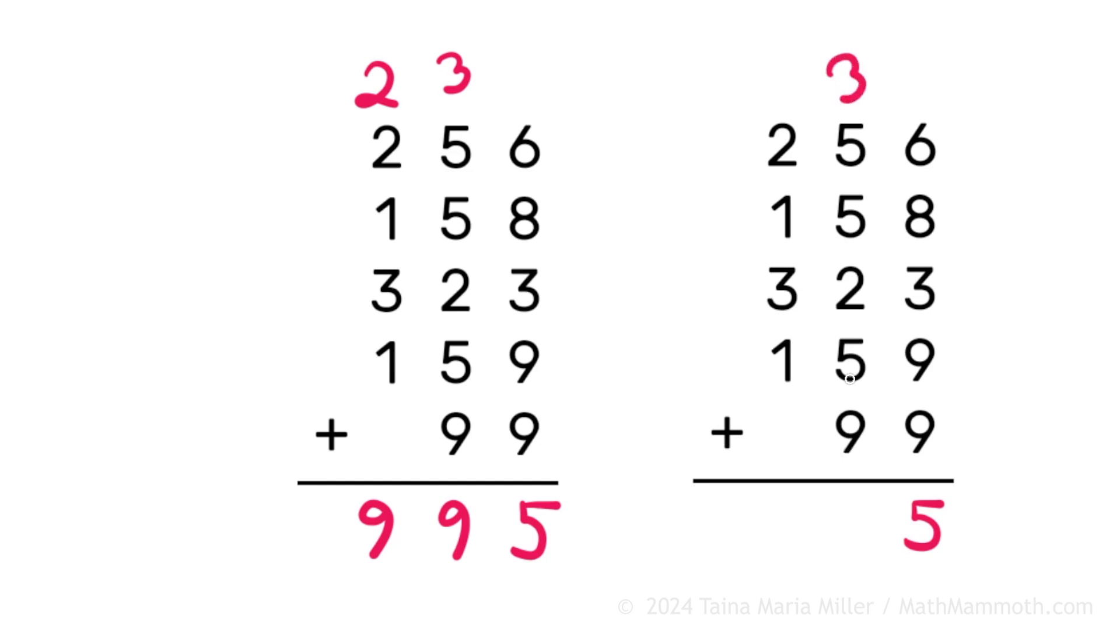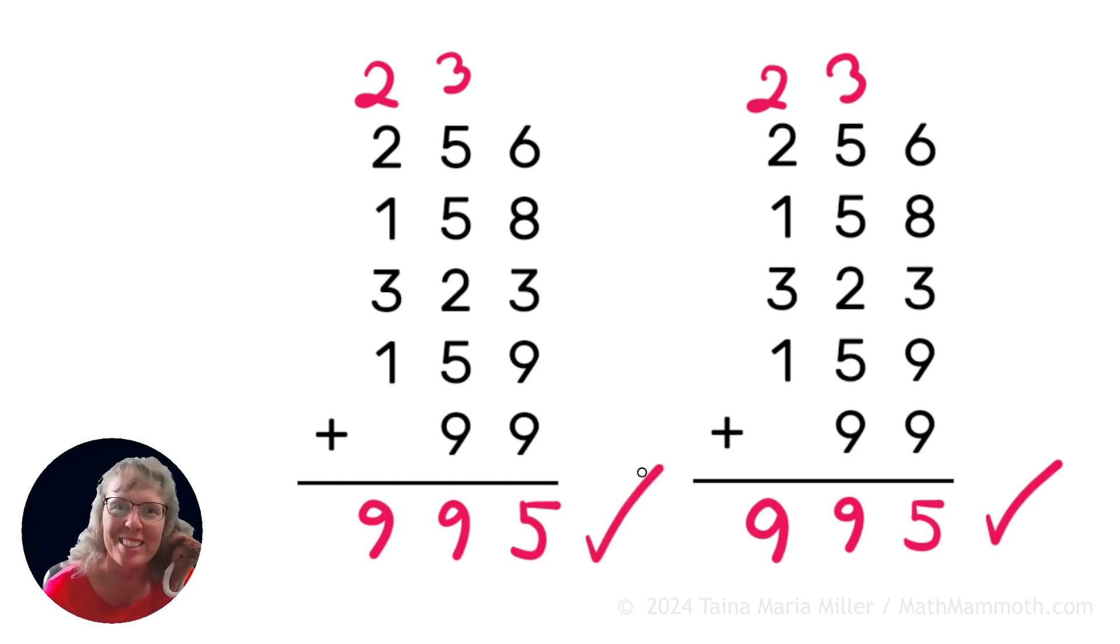Again, I will start from the bottom, 9 plus 5 is 14, plus 2 is 16, then I have the 10. So 26 plus 3 is 29. And then 1 plus 3 here is 4, 5, 7, 9. We got the same result, both ways. So it checks, and all is good.